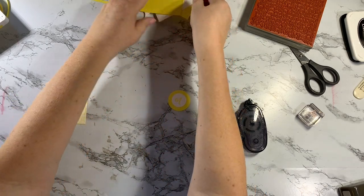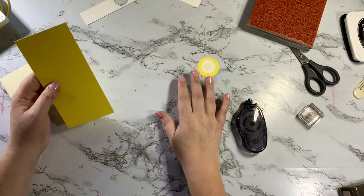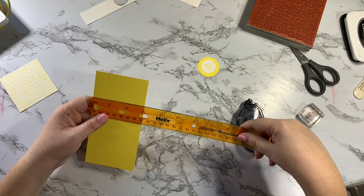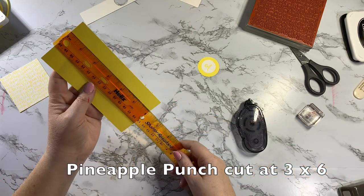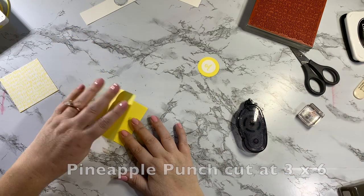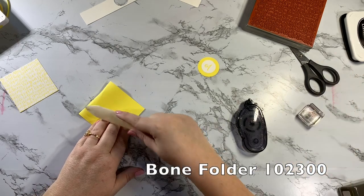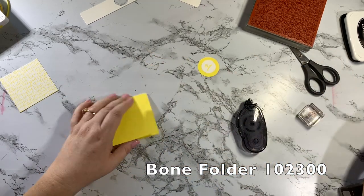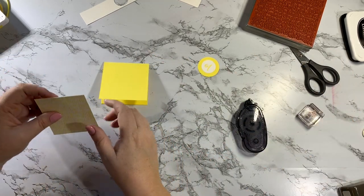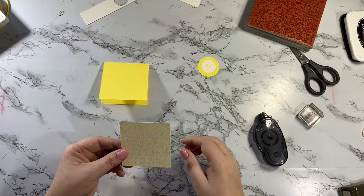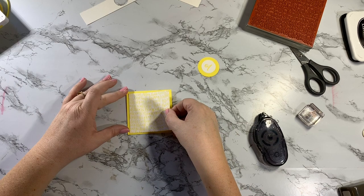Alright, then I have a piece of pineapple punch cardstock and this measures three by six to make my cute little three by three card. And I'm gonna fold that down with my bone folder. There we go. And this is gonna go right on the front.